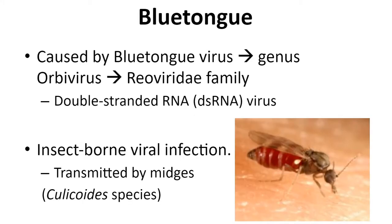Blue tongue is a viral disease caused by a double-stranded RNA virus that belongs to the Orbivirus genus of the Reoviridae family. The virus is insect-borne, which means it's transmitted by insects, particularly midges of the Culicoides species, and it infects several ungulates, primarily sheep and to a lesser extent goats and cattle.